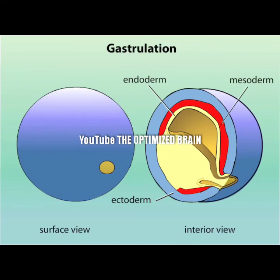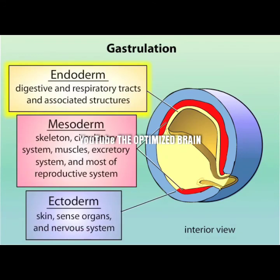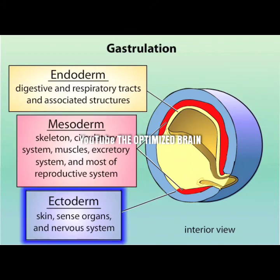Additionally, the fates of specific regions have become determined. The endoderm gives rise to the digestive and respiratory tracts and associated structures. The mesoderm gives rise to the skeleton, circulatory system, muscles, excretory system, and most of the reproductive system. The ectoderm gives rise to the skin, sense organs, and nervous system.